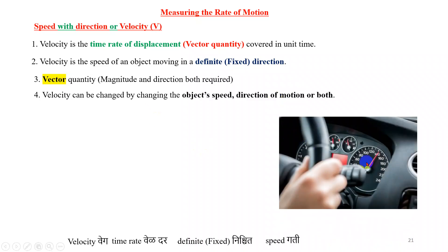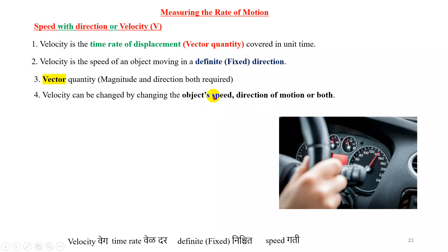Let's take a practical example. Suppose there is a car, and the person driving it is on a highway traveling at a constant speed of 100 km per hour on a flat road. As long as the speed is constant at 100 km per hour, whether you call it speed or velocity, it will remain the same in a certain direction. Now if we want to change the velocity, we can accelerate the car or apply the brakes to retard it, thereby changing the object's speed.